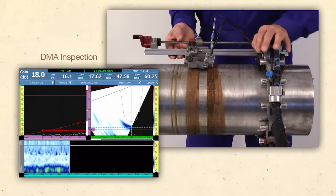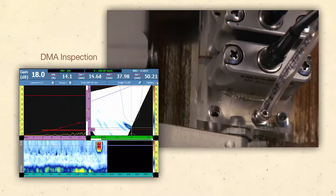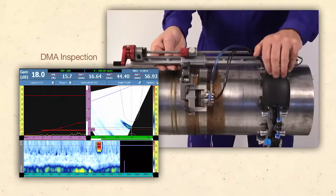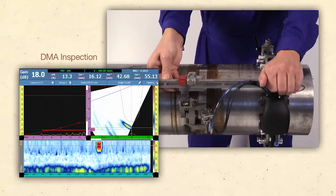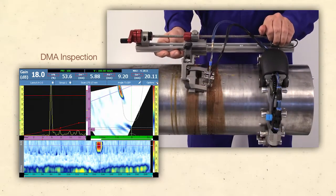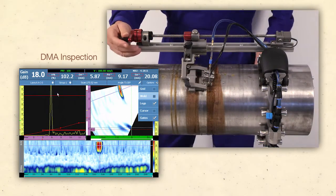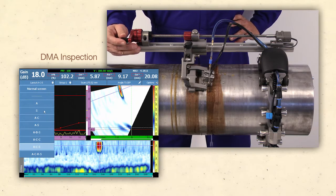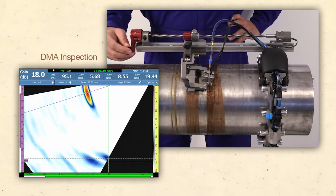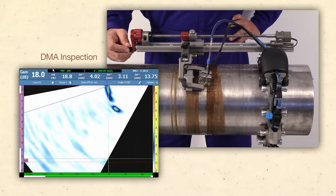For manual encoded inspection, a chain scanner using a single DMA probe performs line scans on an Inconel CRA weld for detection. After a flaw is detected, use of the index raster arm allows the probe to be repositioned for sizing optimization.